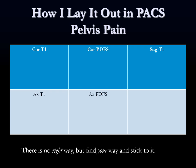There's no right way to lay out the exam, but I suggest figuring out which way you like and doing it the same every single time. I do coronal T1 and PD fat sat, then axial T1 and PD fat sat across the top and bottom, with the sagittal T1 on the upper right - everything triangulated so I can look at anatomy in multiple planes.